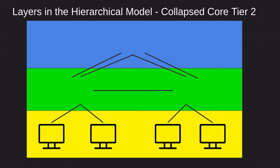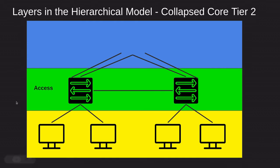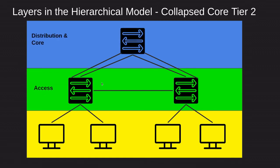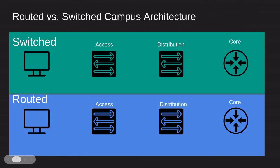That covers the three-tier topology. Then we have the collapsed core, or the tier-two topology. Here we have the access layer providing connectivity to end users — computers, cameras, and printers — just like before. Then we have the distribution and the core collapsed into one layer. That is why it is called the collapsed core: we are collapsing the core and distribution into just one layer instead of three like we saw before.